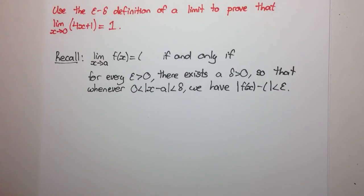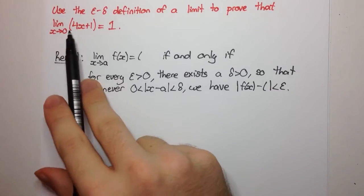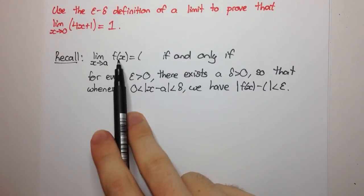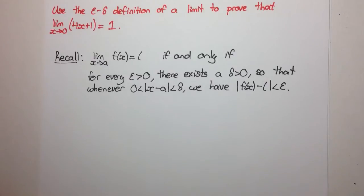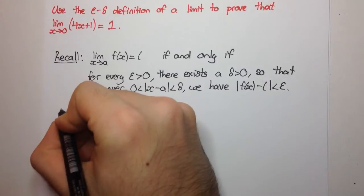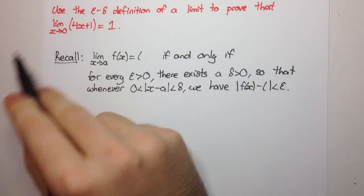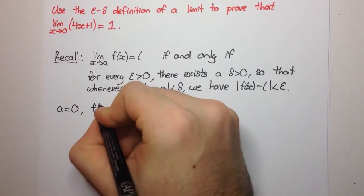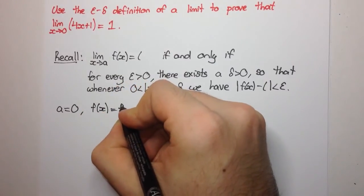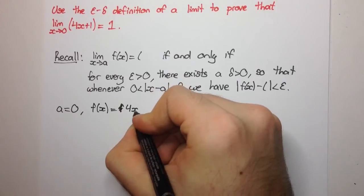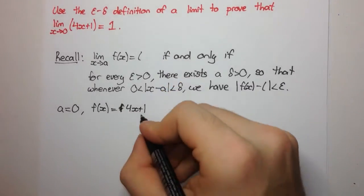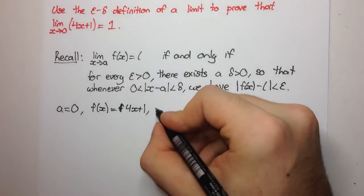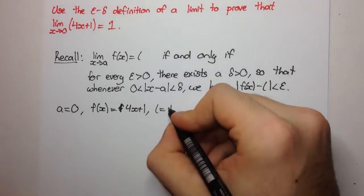So let's see what we have. We're looking at this here and it's of this form. So let's write down what our a's, our f of x and what our l is. In our example a is 0, f of x is 4x plus 1, and l is equal to 1.